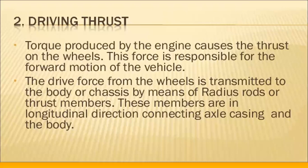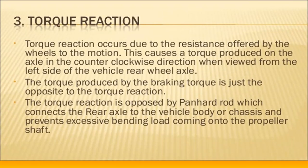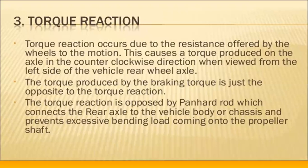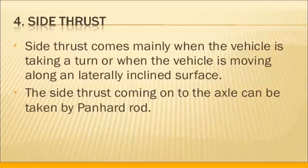The drive force from the wheels is transmitted to the body or chassis by means of radius rods and thrust members, which are in the longitudinal direction connecting the axle casing to the body. Torque reaction: the torque reaction occurs due to the resistance offered by the wheels to the motion. This causes a torque produced on the axle in the counterclockwise direction when viewed from the left side of the vehicle. The torque also develops on the rear wheel axle when running a vehicle on the road. The braking torque is just opposite to the torque reaction. These are the different forces acting on the rear axles.